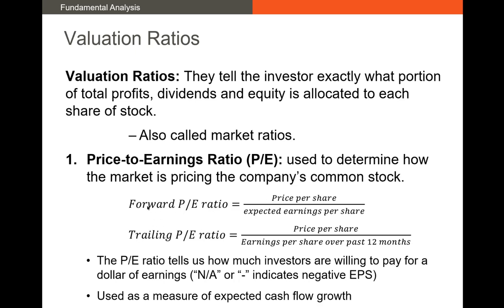There are two main types of P/E ratios: the forward P/E and the trailing P/E. The forward P/E ratio uses expected earnings per share — price divided by forward 12-month earnings per share. The trailing P/E ratio is price per share divided by earnings per share over the past 12 months. If earnings per share are negative, we don't report a negative P/E ratio. Instead, we put a dash or write N/A.